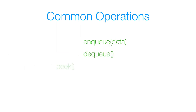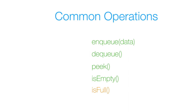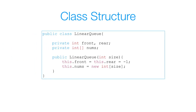Now let's look at the common operations associated with the queue. I'm going to cover five: enqueue, dequeue, peek, isEmpty, and isFull. The class has three instance variables: front, rear, and a nums reference variable. Front keeps track of the front of the queue, rear keeps track of the rear, and I use an int array to represent the queue. In the constructor, I take in a size for the maximum queue size, initialize front and rear to negative one, and initialize nums with a new array of that size.